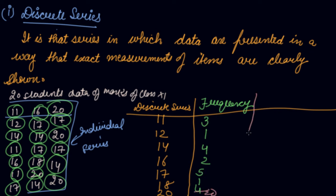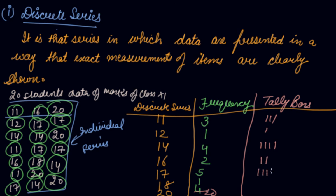We have summarized the data. We can also draw tally bars for this discrete series — for example, 3 tally marks for 11, 1 for 12, 4 for 14, 2 for 16, 5 for 17, 1 for 18, and 4 for 20. This is your discrete series.